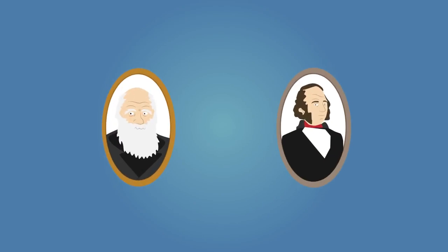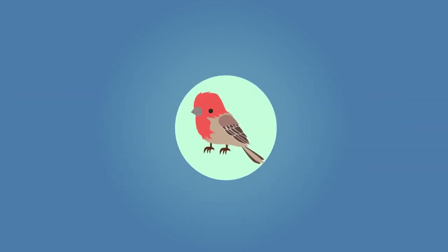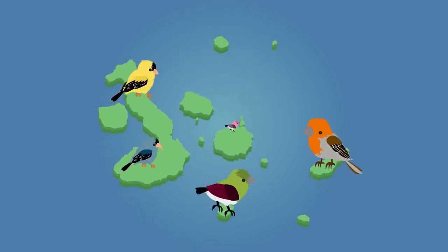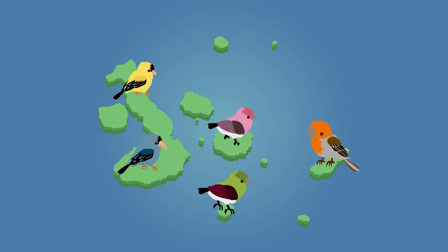The scientists observed that the birds were all similar to a single type of finch found on mainland South America, suggesting that these mainland finches had originally colonized the island. However, the Galapagos finches were all slightly different from the original mainland species and were also different from each other.